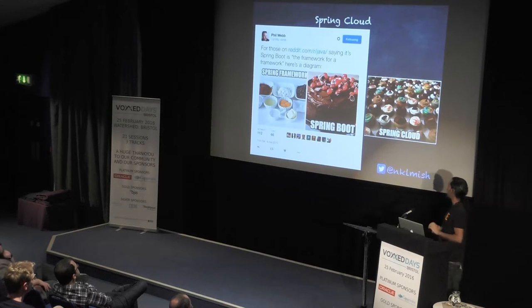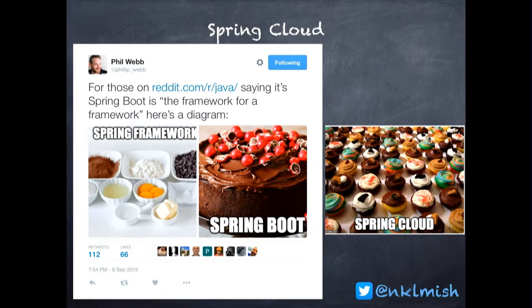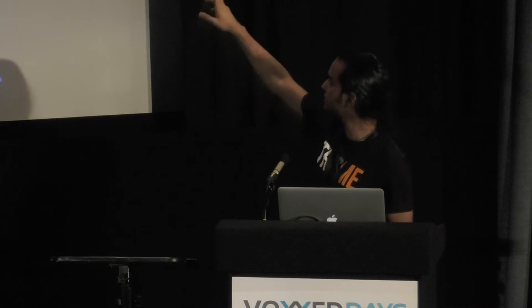I'm going to use Spring Cloud — you can do the same thing with Spring Framework, Spring Boot, or even plain Java. I use Spring Cloud because I'm a bit of a lazy programmer and I want to use cool annotations. The demo will look like this: we'll build a catalog service representing a microservice that needs to communicate with other microservices — product, price, and comments services — which represent self-sufficient microservices that don't need to communicate with each other.